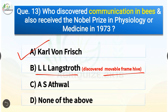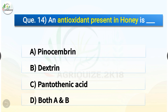Question number fourteen: An antioxidant present in honey is which of the following? The options are: pinocembrin, dextrin, pantothenic acid, or both A and B. The correct answer is option A — pinocembrin. An antioxidant present in honey is pinocembrin.